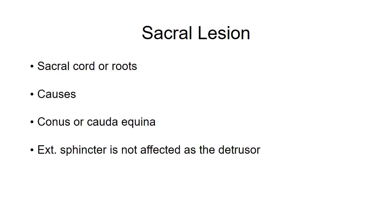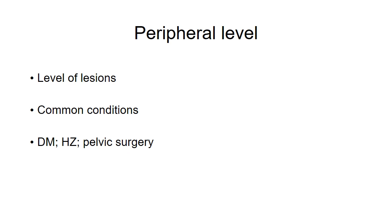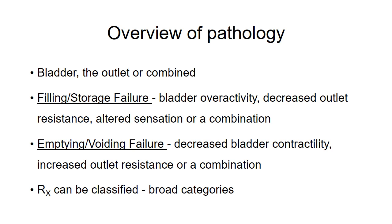Peripheral level lesions are seen in diabetes mellitus, herpes zoster, Guillain-Barré syndrome, pelvic surgery, etc. In diabetes mellitus, the condition usually affects efferent fibers and the patient will have motor neuropathy, whereas in pelvic surgery both sensory and motor neuropathies are affected.